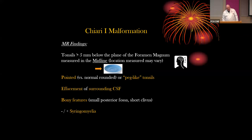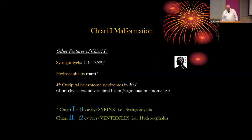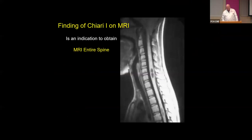Chiari 1 features include: tonsils greater than five millimeters below the foramen magnum, usually pointed and with effacement of CSF, and related bony features such as a small posterior fossa or short clivus. The patient will need an MRI of the entire spine because syringomyelia is associated with Chiari 1 — approximately 50% have syringomyelia. Hydrocephalus is rare in Chiari 1 but associated with Chiari 2. A simple mnemonic: Chiari 1 has one cavity — a syrinx; Chiari 2 has two cavities — the ventricles, with associated hydrocephalus. Finding Chiari on MRI of the brain is an indication to perform a full spine MRI.